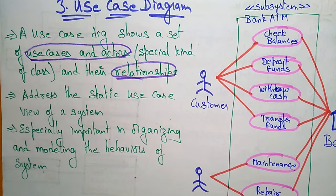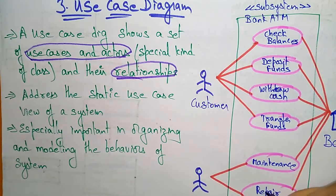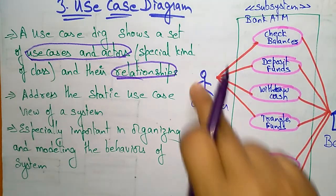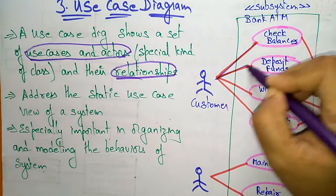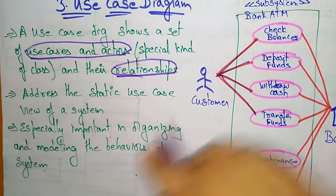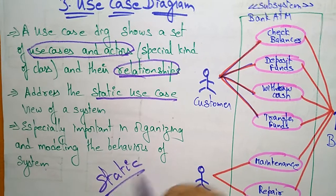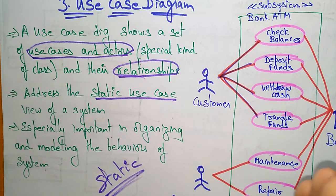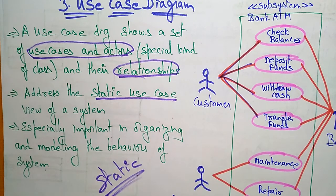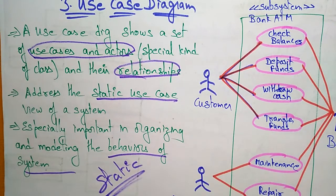A use case diagram shows a set of use cases, actors, and relationships. The use case diagram addresses the static use case view of a system. It is especially important in organizing and modeling the behavior of a system — the model represents the behavior of a system.